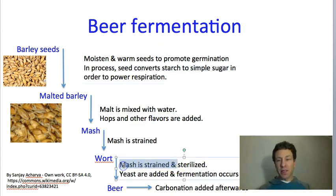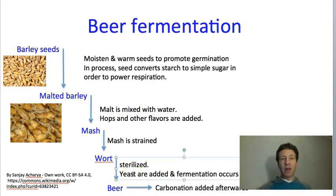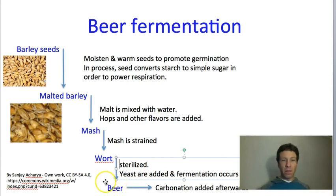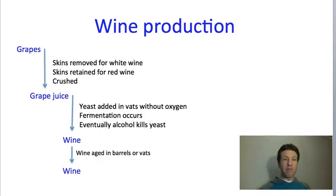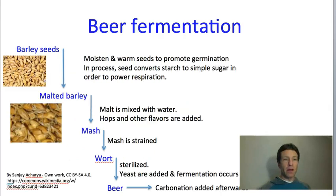The mash still has all of the solids in it, so the next step is to drain out the solids. The liquid that remains is called the wort. The wort is then sterilized, and once sterile, an appropriate kind of yeast is added. Depending on which kind of beer is being made, there are a couple of different possible yeasts. The yeast, in a liquid environment without much oxygen, perform fermentation — one result is the release of carbon dioxide, and the other result is the production of alcohol. That carbon dioxide is released into the environment; the bubbles in beer actually come from carbon dioxide added afterwards before bottling. The process went from seeds to malt to mash to wort to beer.